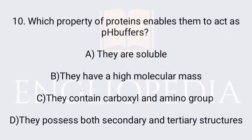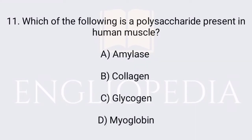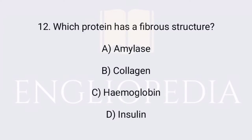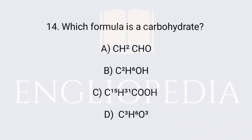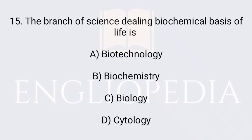Which property of proteins enables them to act as pH buffers? The property is that they contain carboxyl and amino groups. Which of the following is a polysaccharide present in human muscle? Glycogen is a polysaccharide present in human muscle. Which protein has a fibrous structure? Collagen is a protein with fibrous structure. Which feature is not characteristic of cellulose? The 1-6 glycosidic bond is not characteristic of cellulose.